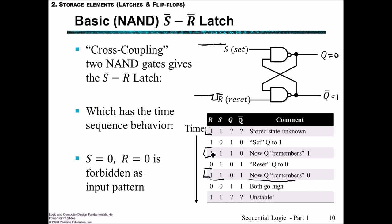Similar to before, we have both reset and set being in the same state of 1, 1 as the memory state. And similar to before, where we were trying to avoid having S=1, R=1 for the NOR SR latch, for the NAND SR latch we have to avoid S=0, R=0, because in the case of 0, 0, both the outputs will go high.